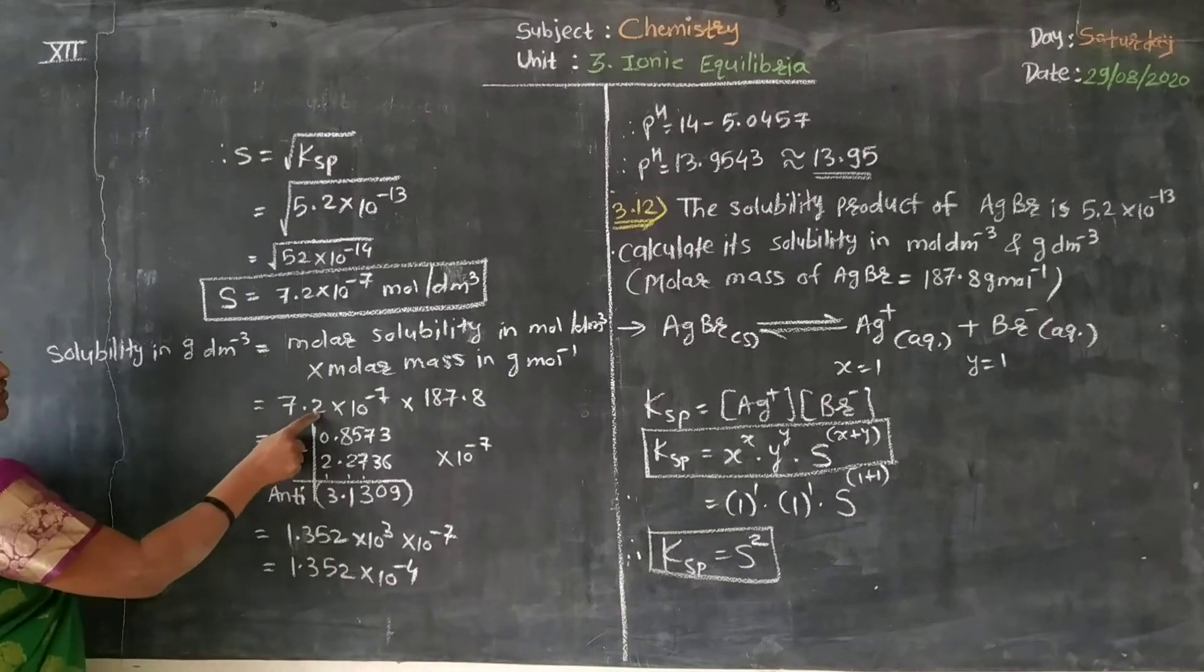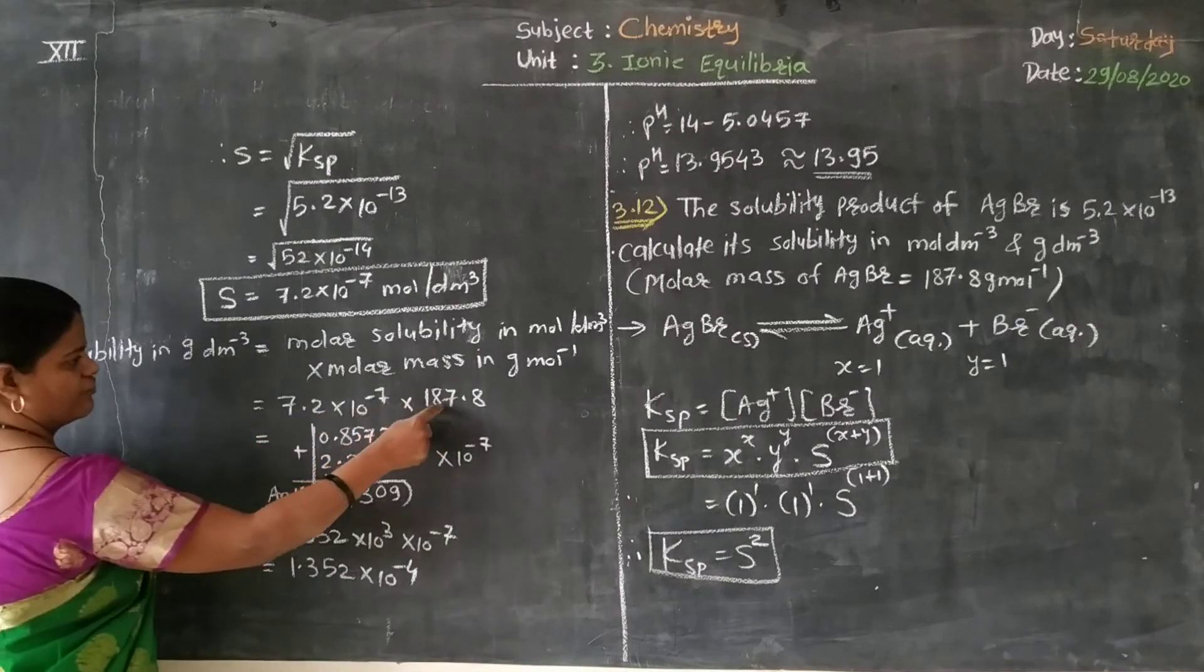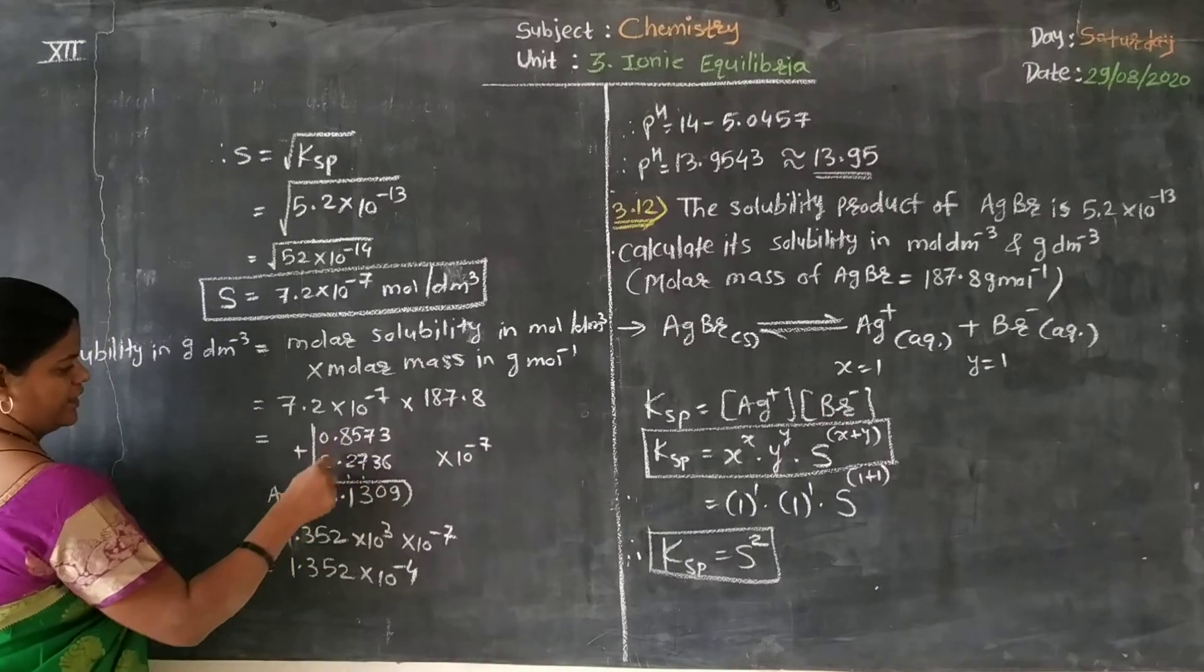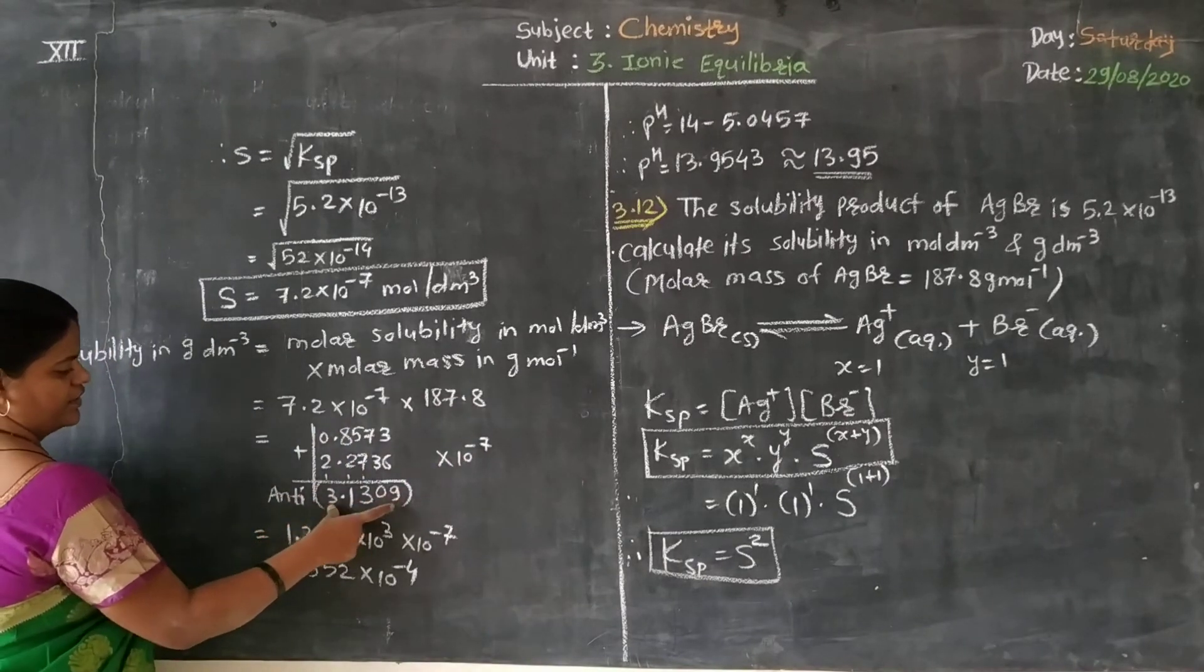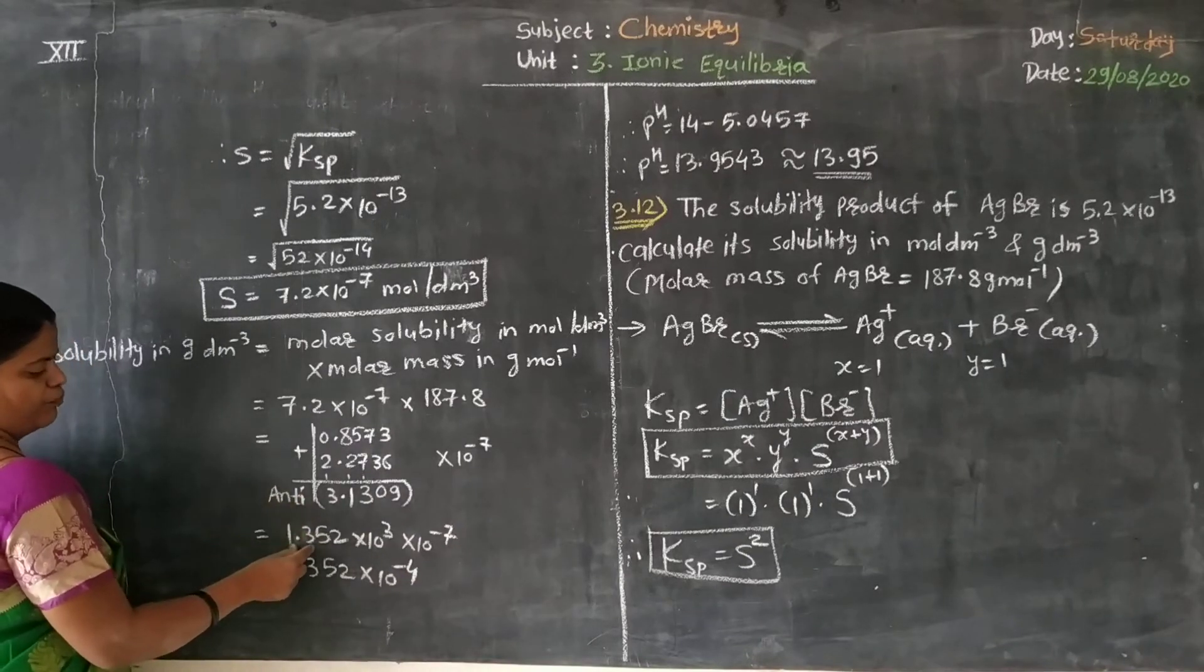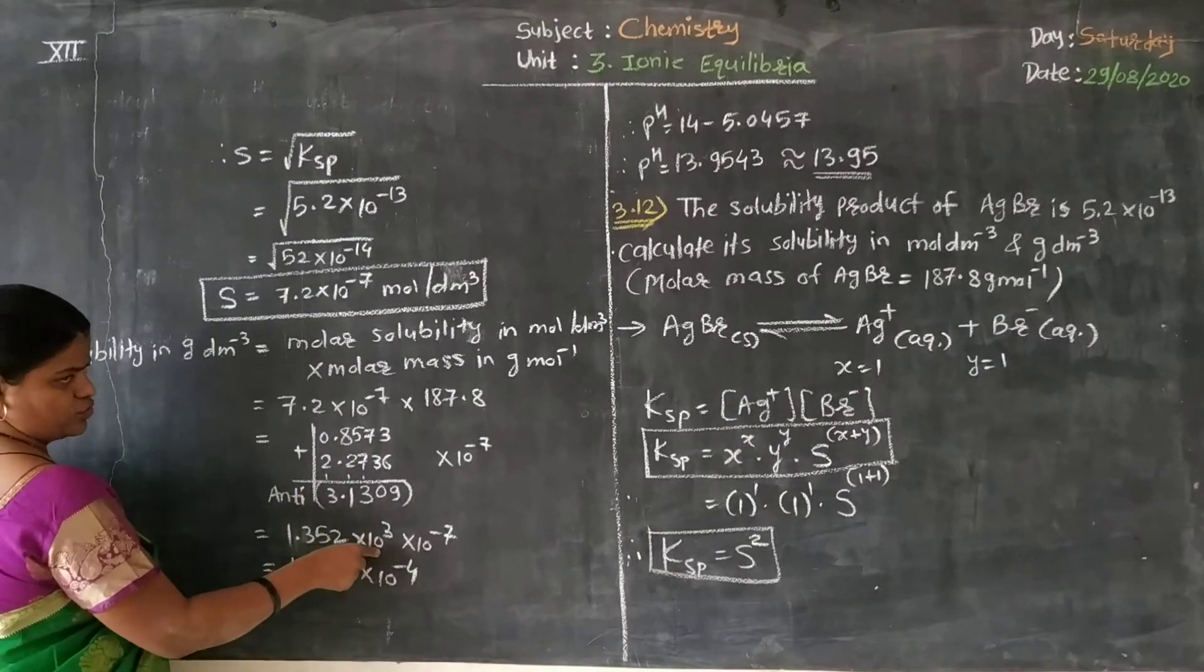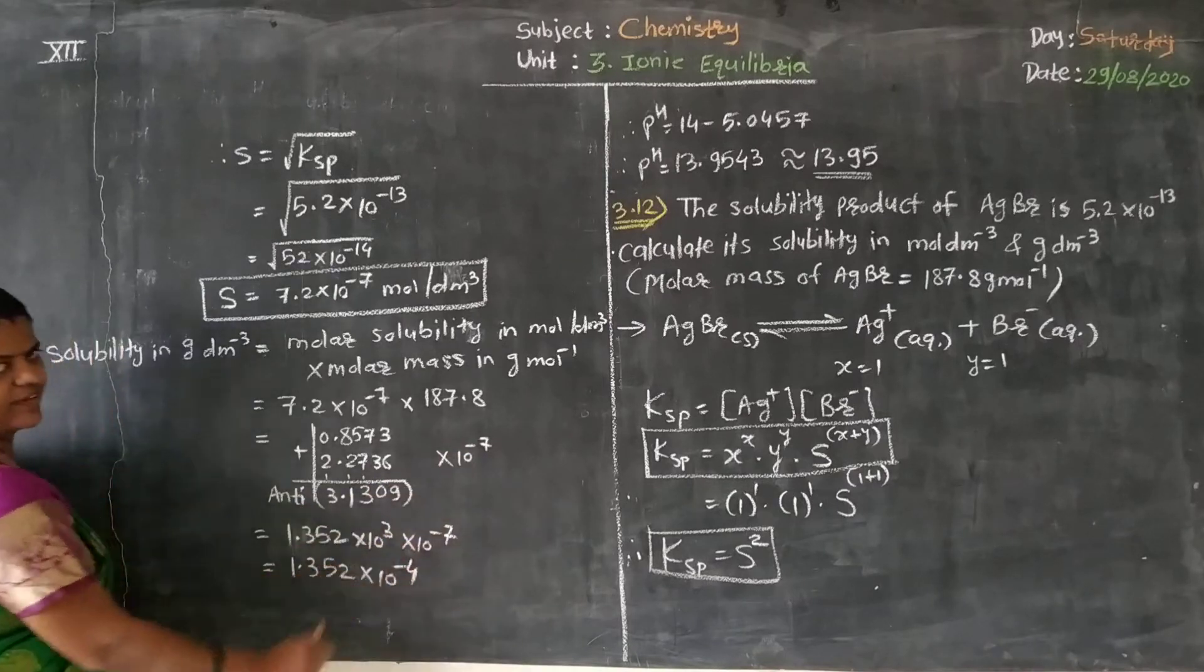7.2 log of 7.2 plus log of 187.8, making this summation it comes to 3.1309. Taking antilog of this will get 1.352 × 10³, and 10⁻⁷ as it is.